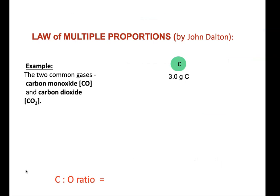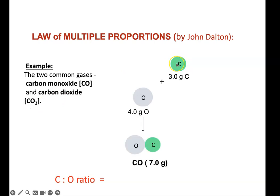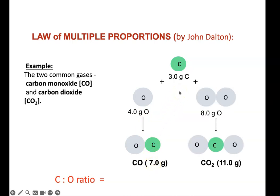Let's look at an example using carbon monoxide (CO) and carbon dioxide (CO₂). If we make both compounds with three grams of carbon, we combine the three grams of carbon with four grams of oxygen to give seven grams of carbon monoxide. Then we combine three grams of carbon with eight grams of oxygen — double the amount — giving eleven grams of carbon dioxide. CO₂ has two oxygen atoms compared to one in CO.